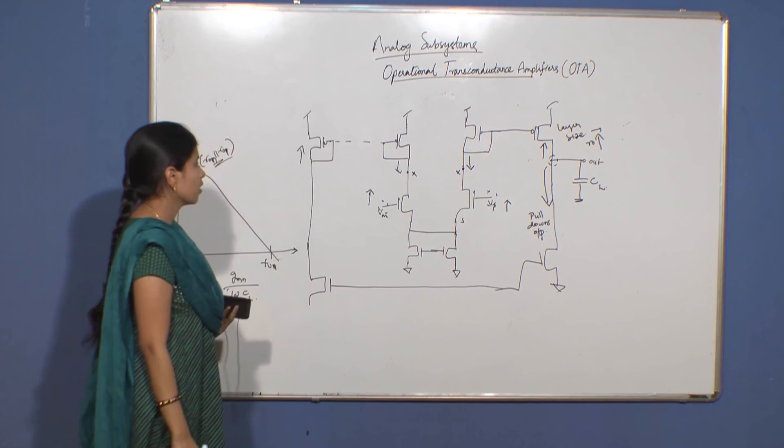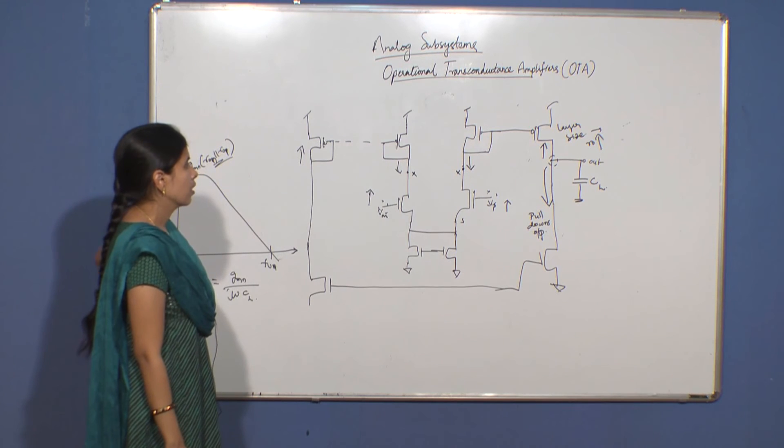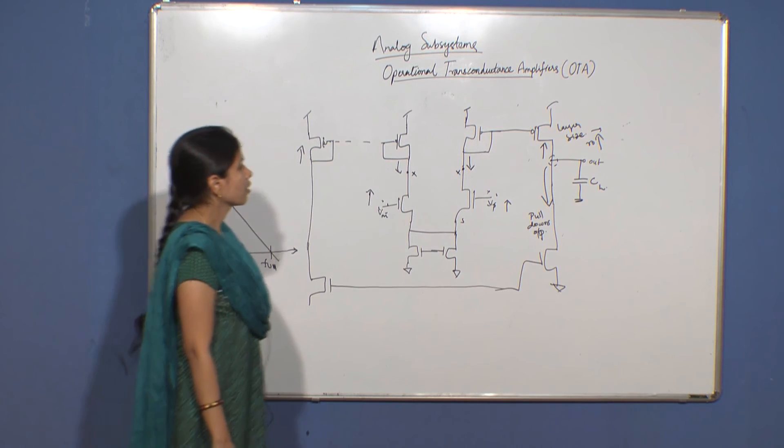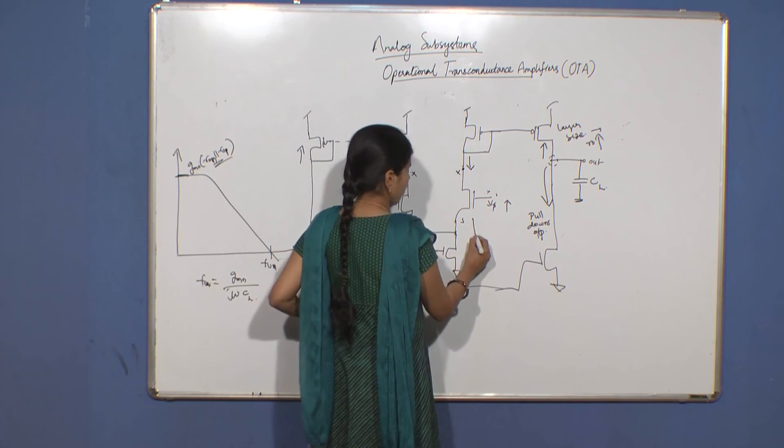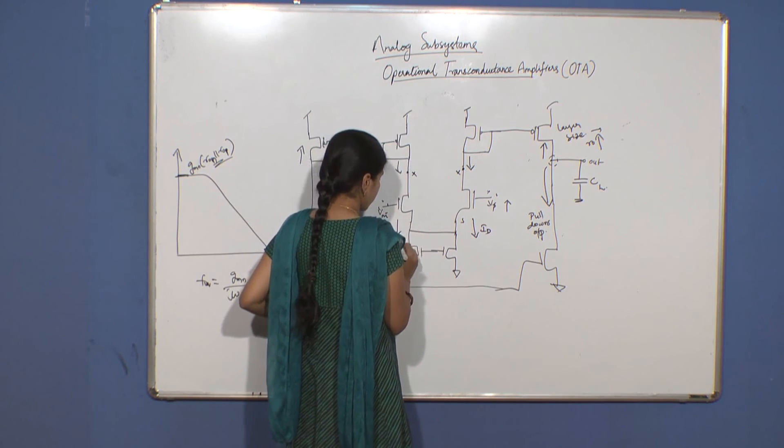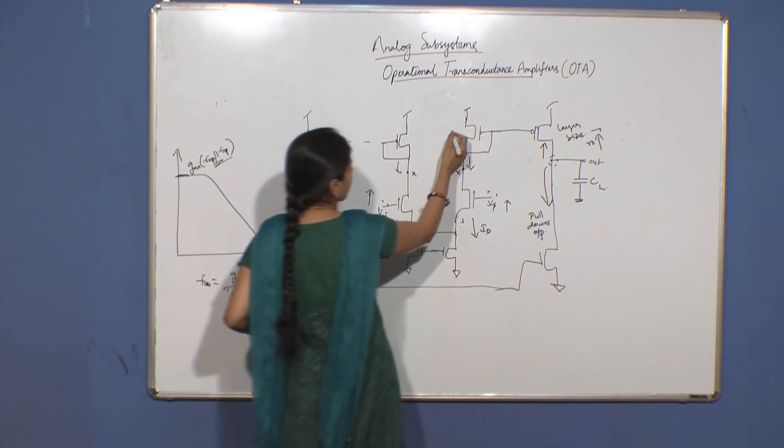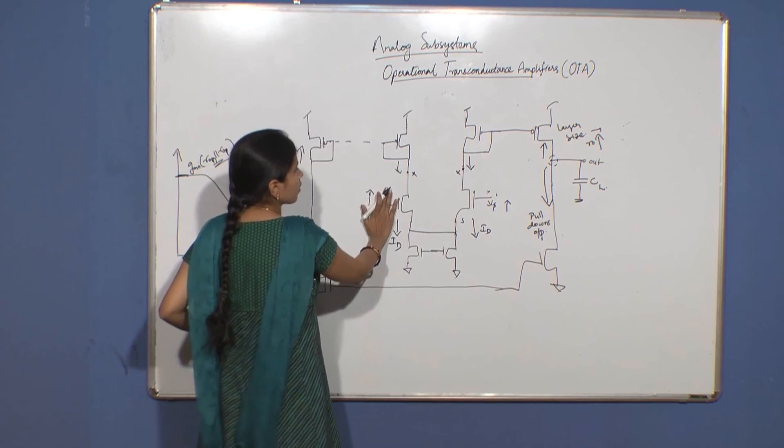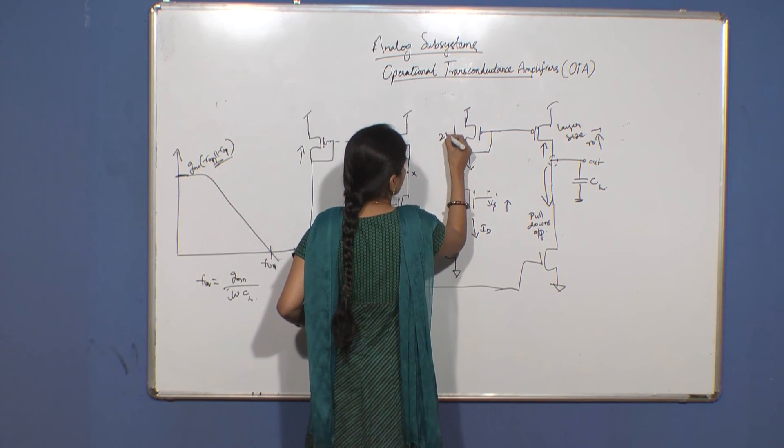What is the slew rate required for your CL to get charged or discharged? Let's say you have a bias current ID flowing here, you have ID flowing here, so you have 2ID here. Suppose if this is off, the total current flowing through here is 2ID.